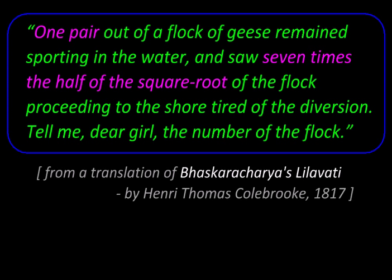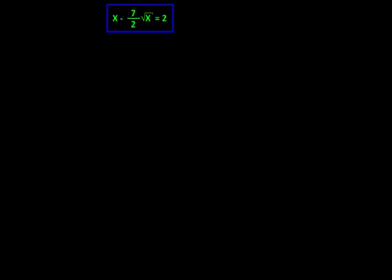Let us put this in mathematical form. So this is the equation that we have here. Say x is the quantity originally present in the flock, and 7/2 times its square root have flown away, so that I have subtracted. And that has left behind the right hand side, which is 2.